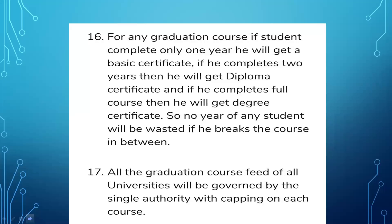For any graduation course, if a student completes only one year, they will receive a basic certificate. If they complete two years, they will receive a diploma certificate, and if they complete the full course, they will receive a degree certificate. No year of a student's study will be wasted if they take a break. The fees of all universities will be governed by a single authority for each course.